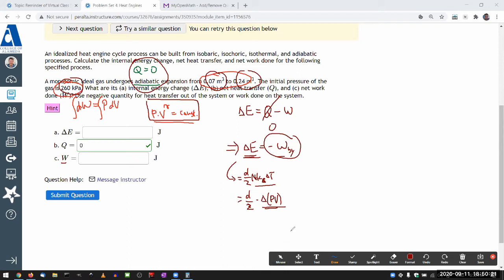So it looks like what I need to do is, I have V initial, it's 0.07 cubic meter, V final is 0.24 cubic meter. So here I have P initial, 260 kilopascal. It looks like I should find the P final first. And there I'm going to use this adiabatic relationship.